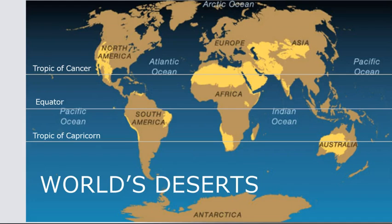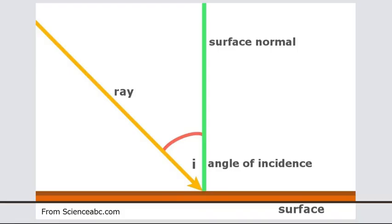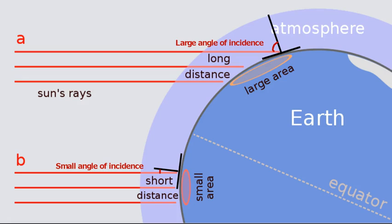Warm deserts are generally located near the tropics, where the angle of incidence of the sun's energy is low. The angle of incidence is the angle between a line perpendicular to Earth's surface and incoming energy from the sun. When the sun is directly overhead, the angle of incidence is zero, and the sun's energy is concentrated in a smaller area. This happens between the tropics.